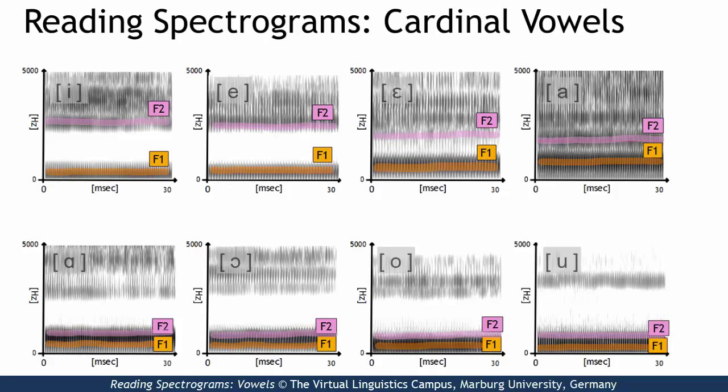Here are the spectrograms of all eight cardinal vowels: I, E, A, A, O, O.